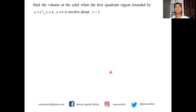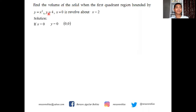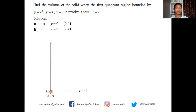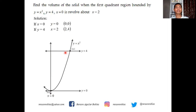Find the volume when the first-quadrant region bounded by y = x², y = 4, and x = 0 is revolved about x = 2. First, find points of intersection: when x = 0, y = 0 giving point (0, 0); when y = 4, x = 2 giving point (2, 4). We plot the parabola y = x² opening upward, the line y = 4, and x = 0. The axis of revolution x = 2 is vertical, so we draw a horizontal element perpendicular to it. The element does not touch the axis of revolution, confirming the washer method.